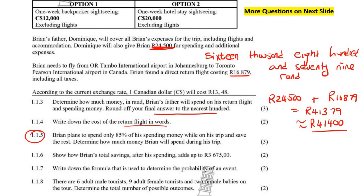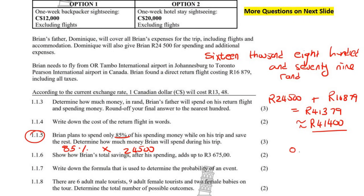Question 1.1.5: Brian plans to spend only 85% of his spending money while on his trip and save the rest. Determine how much money he will spend. We calculate 85% of 24,500. 'Of' means multiply, so: 0.85 multiplied by 24,500 gives us 20,825 Rand.